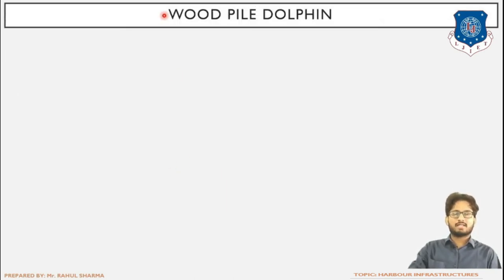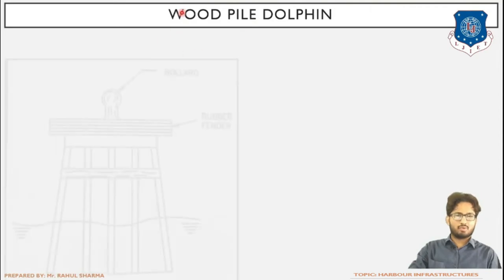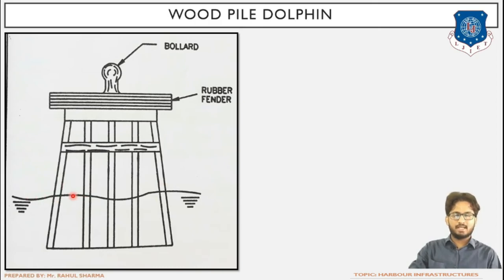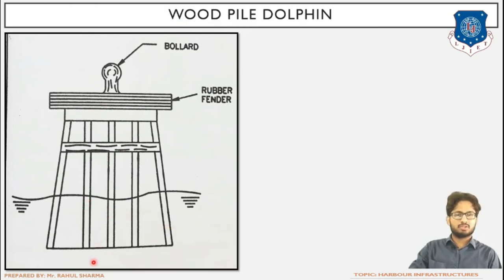Now, the types of dolphins based on material: flexible and rigid. Wood pile is the flexible type of dolphin. The reason for using the word flexible is that due to displacement — wood is a structure where, if a high force from the ship acts on it, its position can be displaced. The wood pile dolphin uses wood as the construction material. These are end-bearing piles, transferring the load from the top to the seabed or strata.